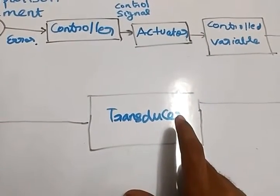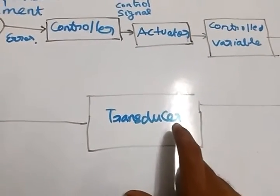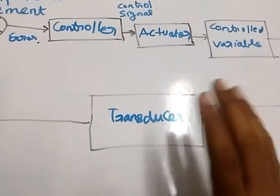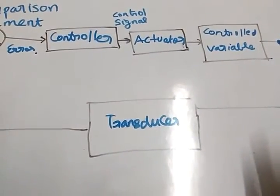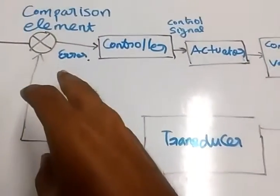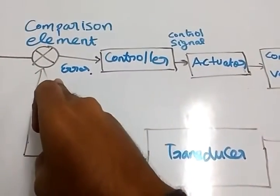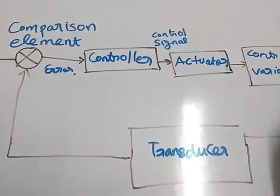So the sensor is saying, sensor is not going to find any error. It is just going to feed the comparison element about the position of the arm.